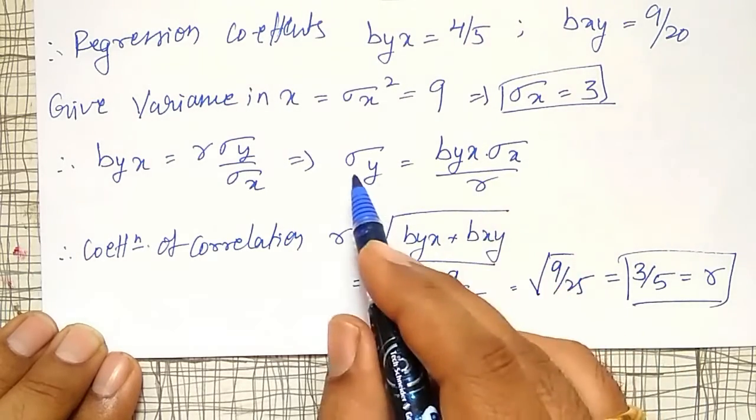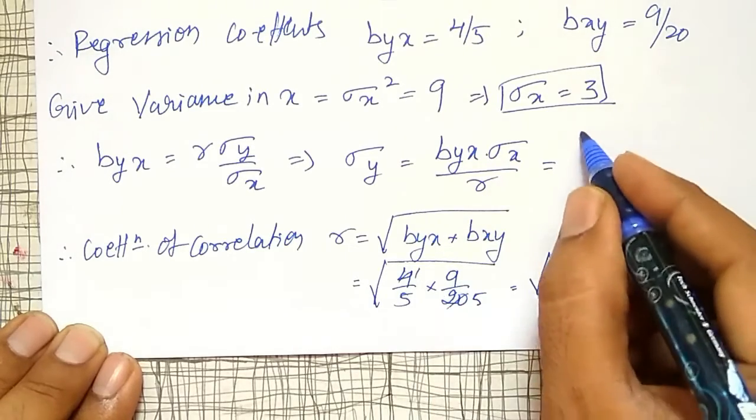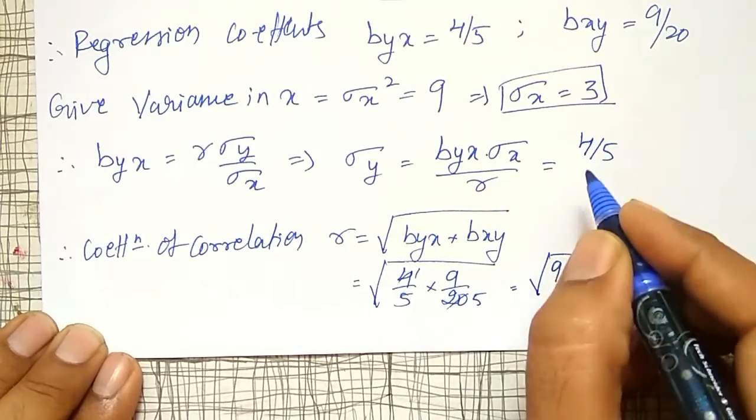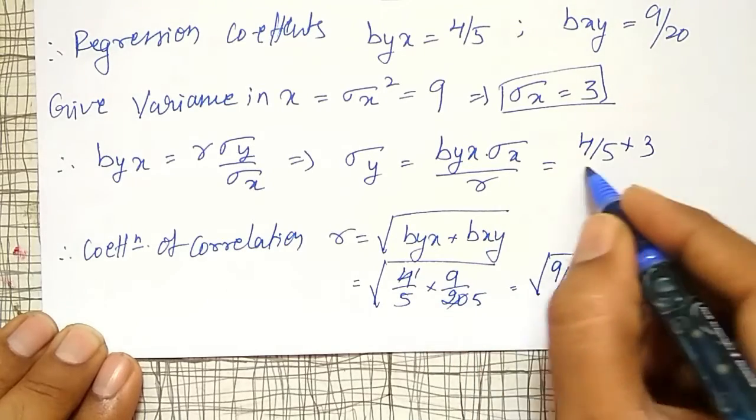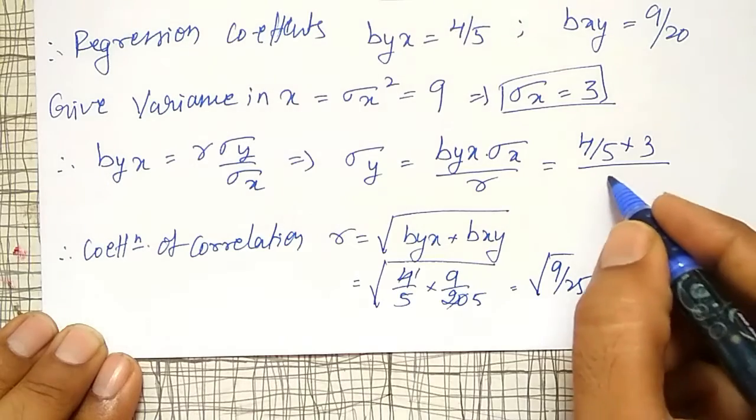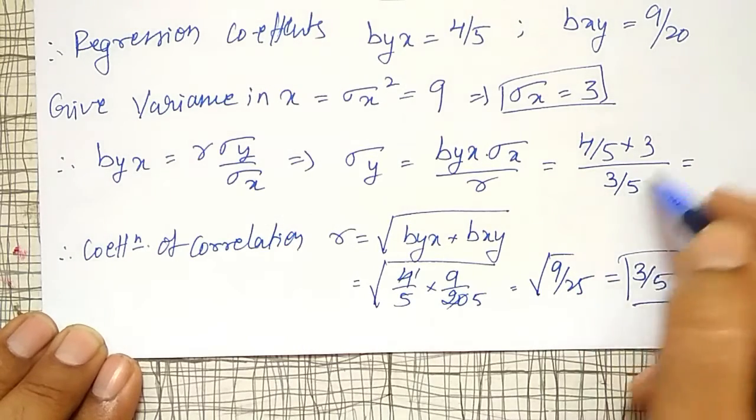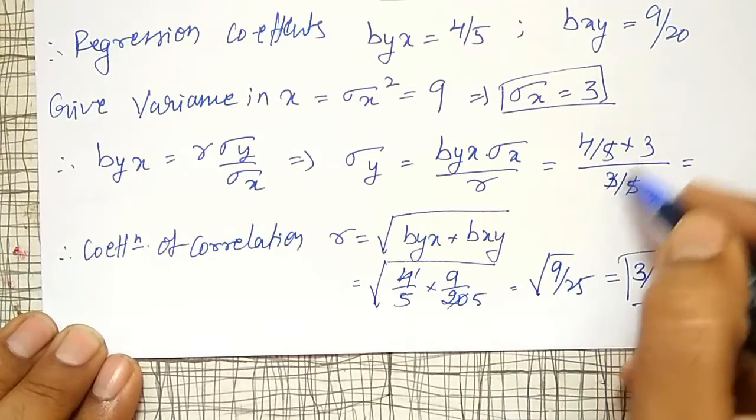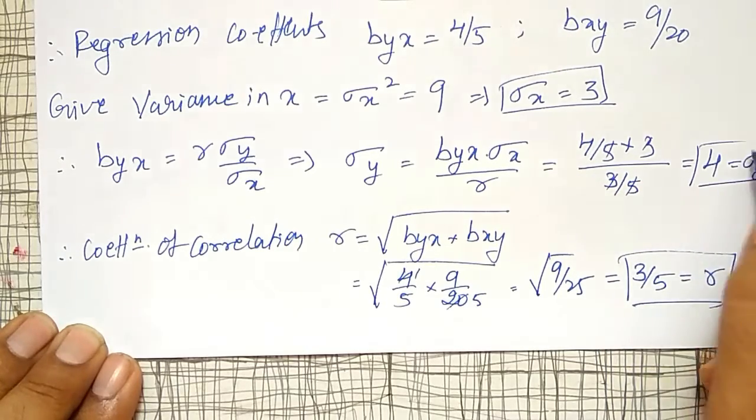Using this r, I have to find out this one. byx value I know - byx value is 4/5. And σx is 3, just now calculated, divided by r, which is 3/5. And it comes out to be equal to, if you reciprocate it, five cancels, three cancels, equal to 4, is my σy.